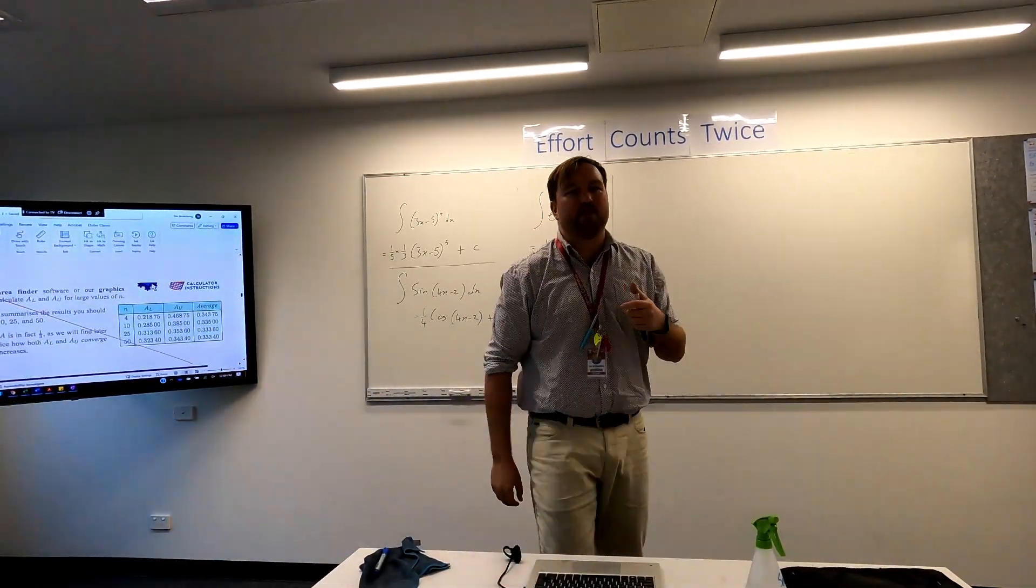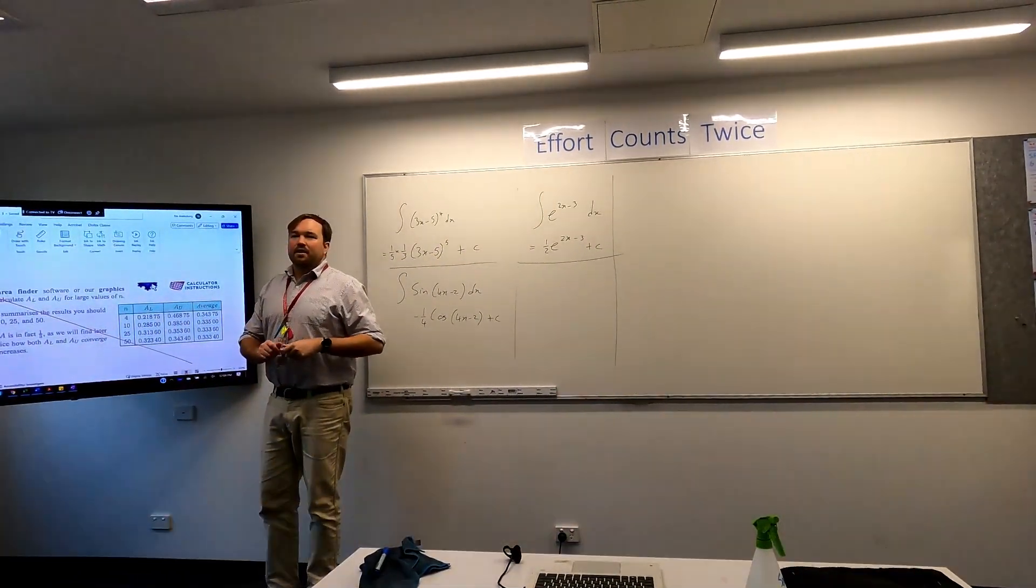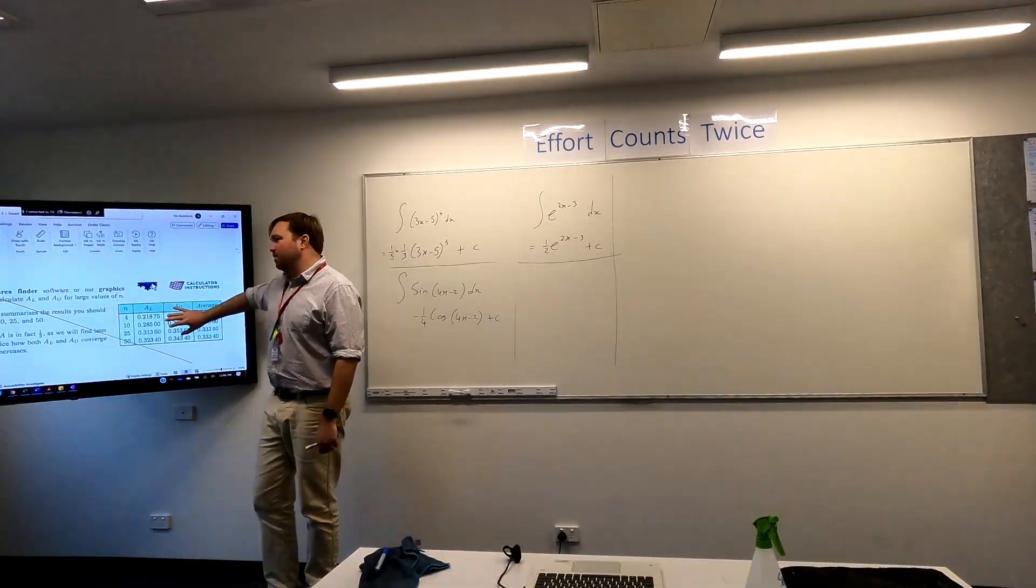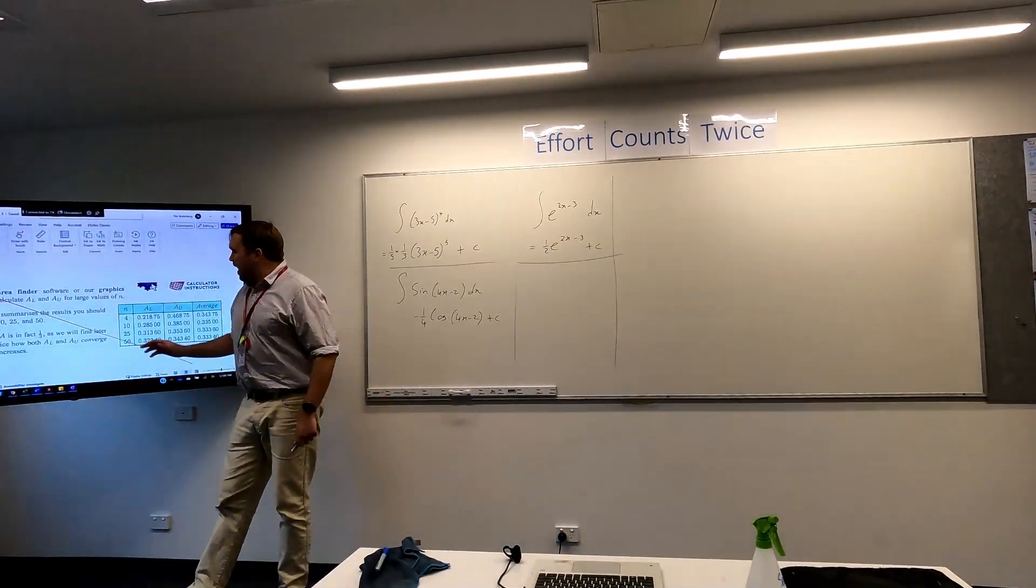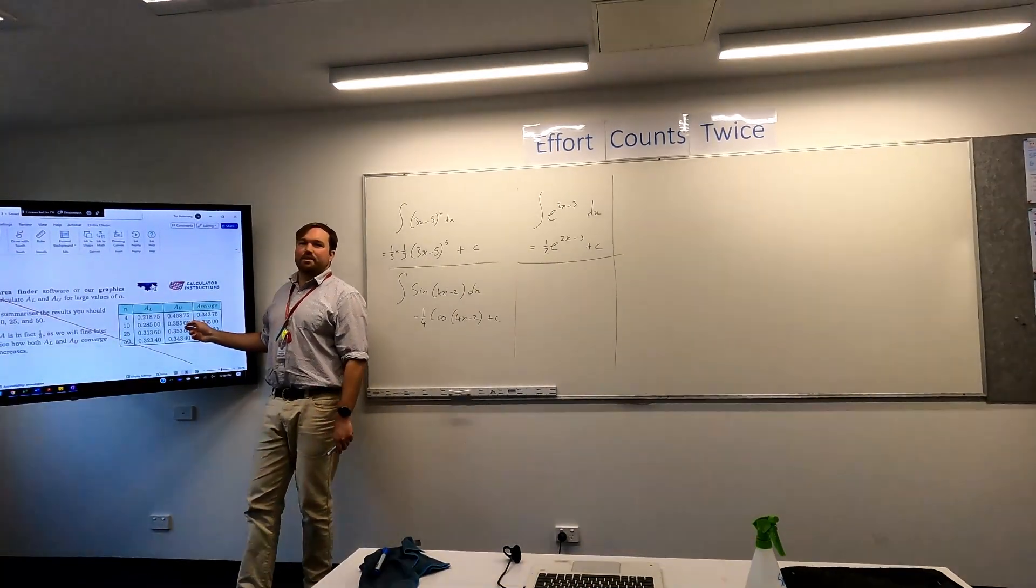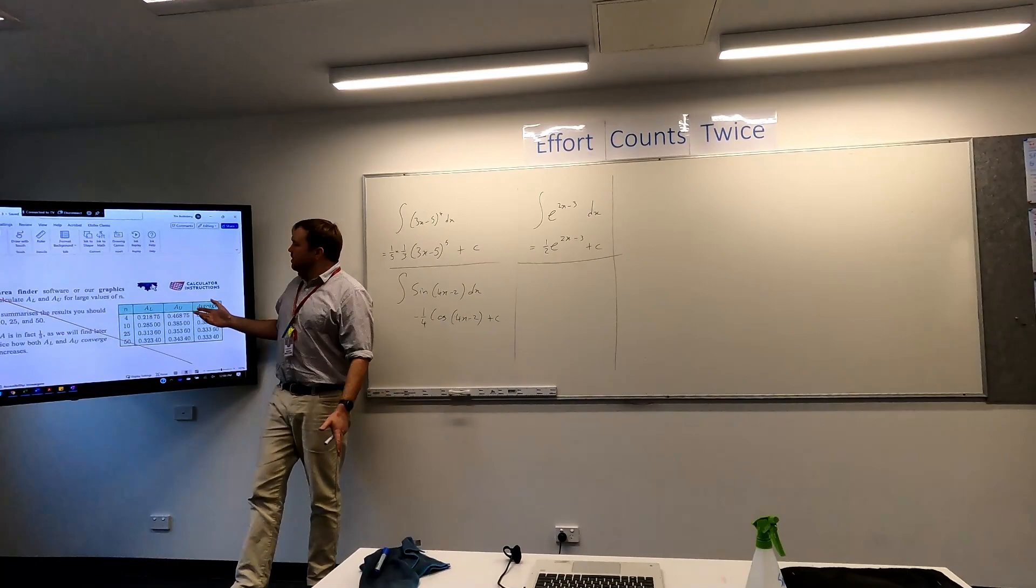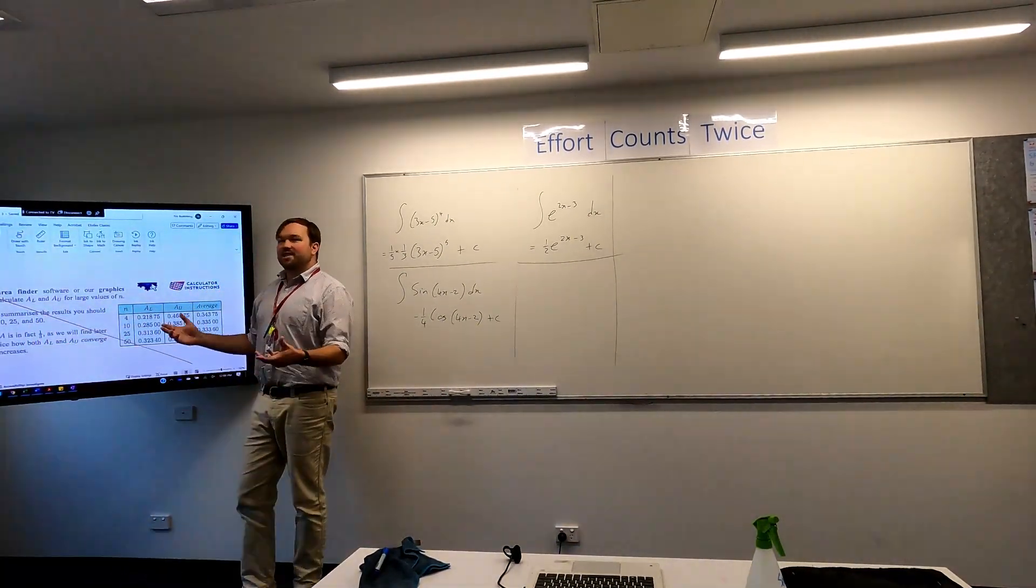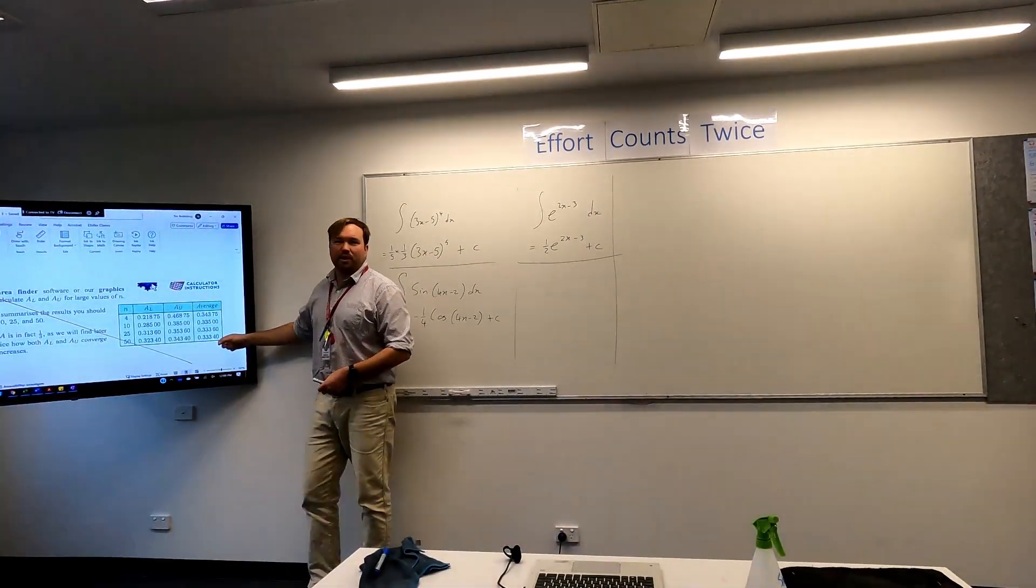All right. Now, your textbook does something very strange. It pretends you have the software to do this with lots and lots and lots of rectangles. 4, 10, 25, 50 rectangles. However, in SACE, they don't expect you to use this software, and the examiners have said the maximum you'll be asked to do is six rectangles. So, I don't have much interest in you guys calculating 25 or 50 rectangles. It's neat to see it approach a certain value. Like, here's the average of the upper and lower.